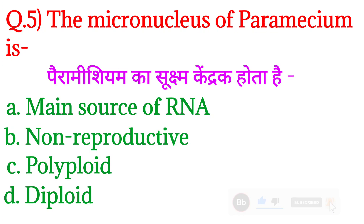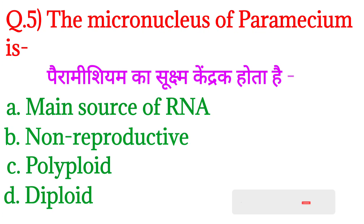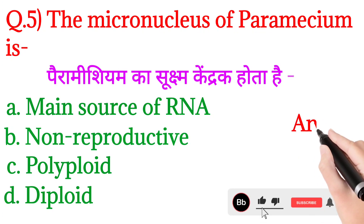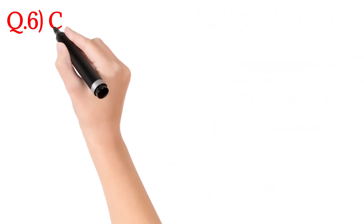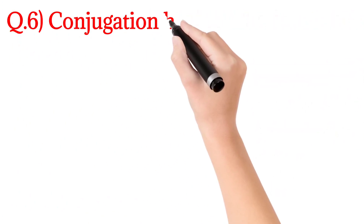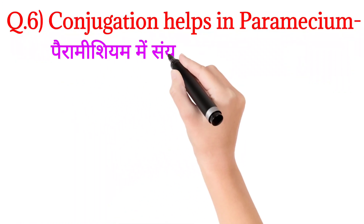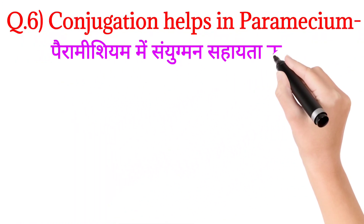Agar abhi tak aapne is channel ko subscribe nahi kiya, please channel ko subscribe kariye. Chalo iska answer hoga option number D: diploid. Paramecium ka micronucleus diploid hota hai.